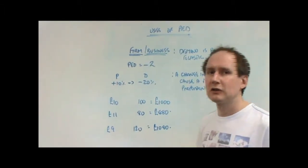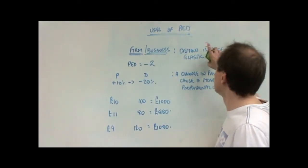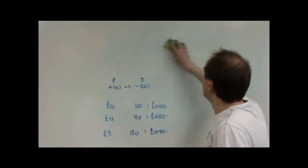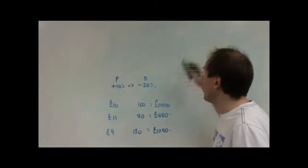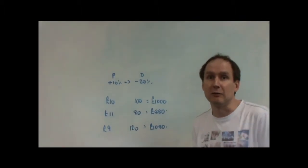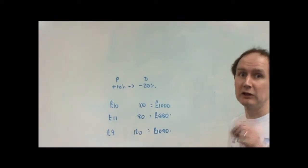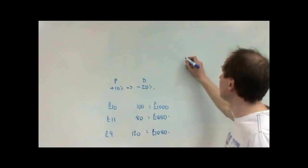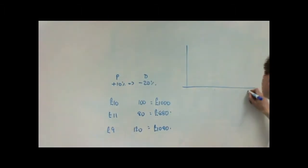Now, obviously, cutting price to £9 has risks because whether you actually make any more profit will depend on what your cost structure is. It's not a very good idea if it costs you £9.50 to make each unit. But nevertheless, it's going to be probably better to cut price than to increase it. And we can show this quite clearly, diagrammatically.